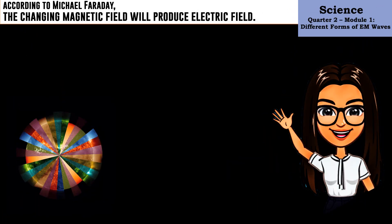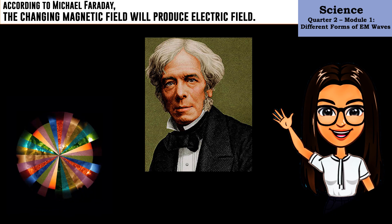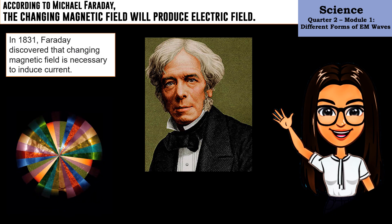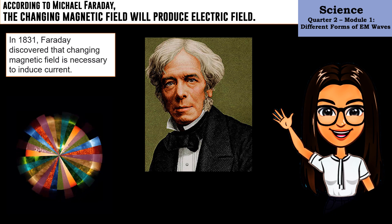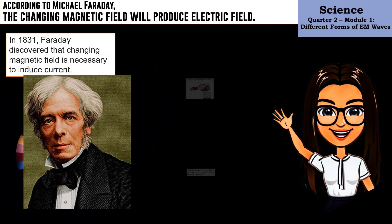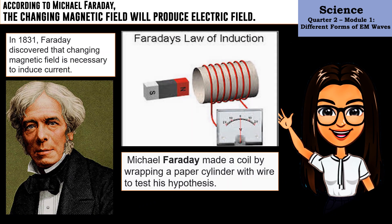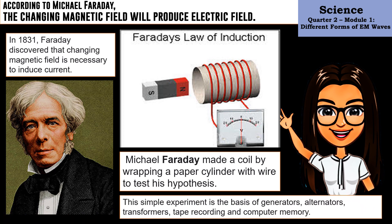Another experiment happened a few years after Ersted. Michael Faraday conducted an experiment in 1831. He discovered that a changing magnetic field is necessary to induce current. In his experiment, Faraday made a coil by wrapping a paper cylinder with wire. This experiment proved his hypothesis that a changing magnetic field will produce an electric field. This simple experiment is the basis of generators, alternators, transformers, tape recording, and computer memory.